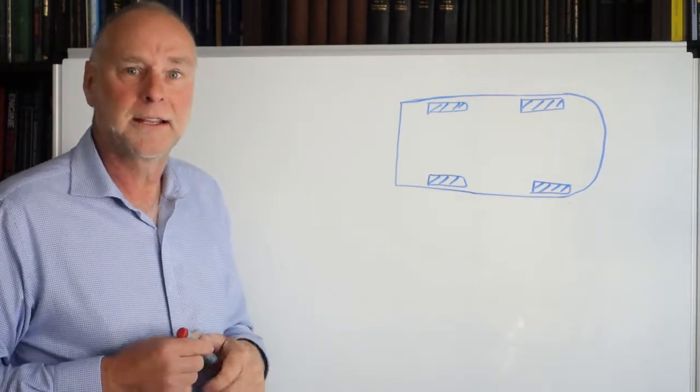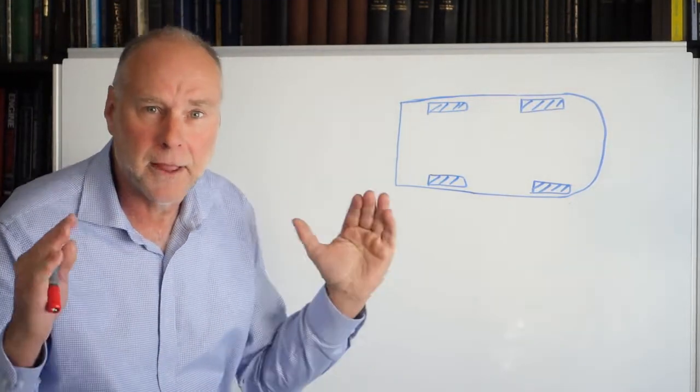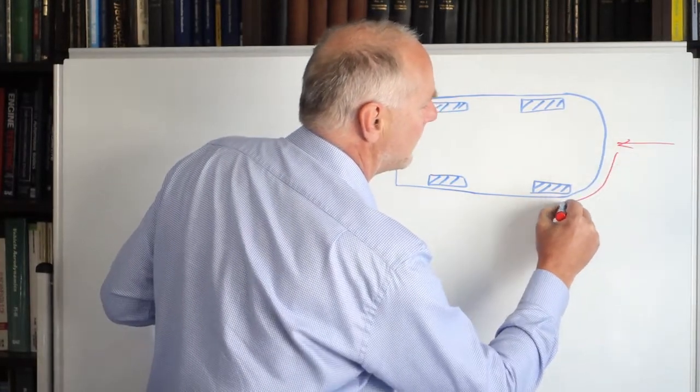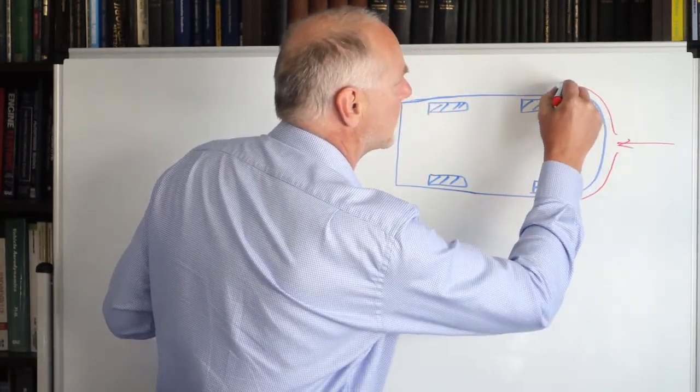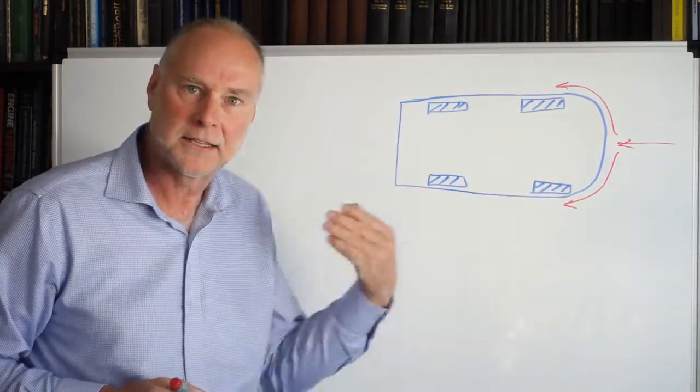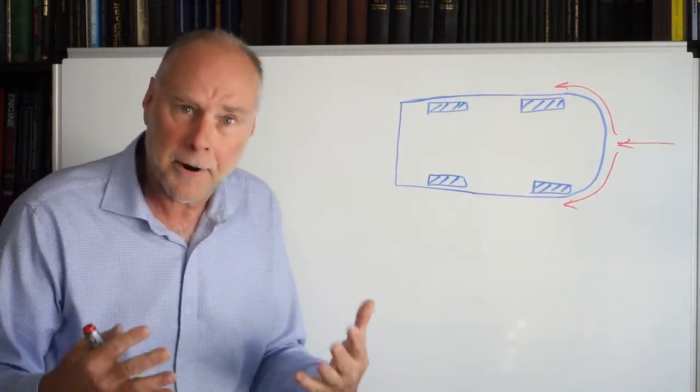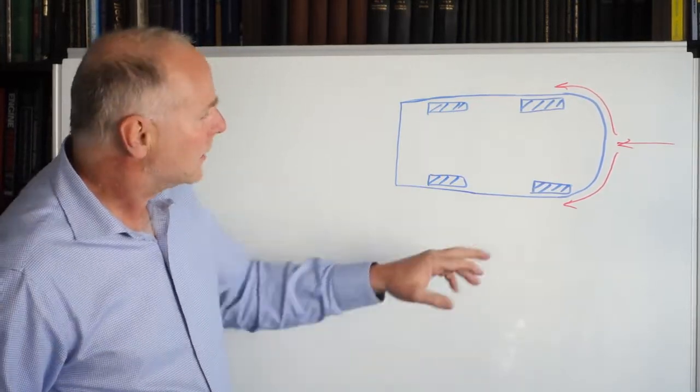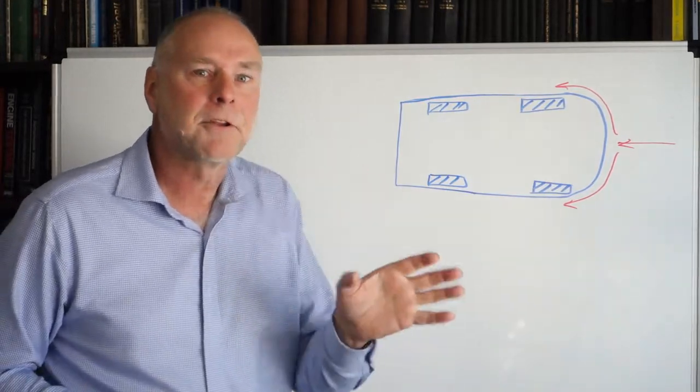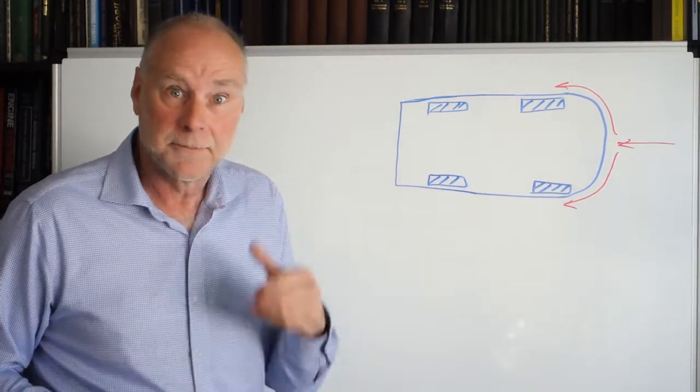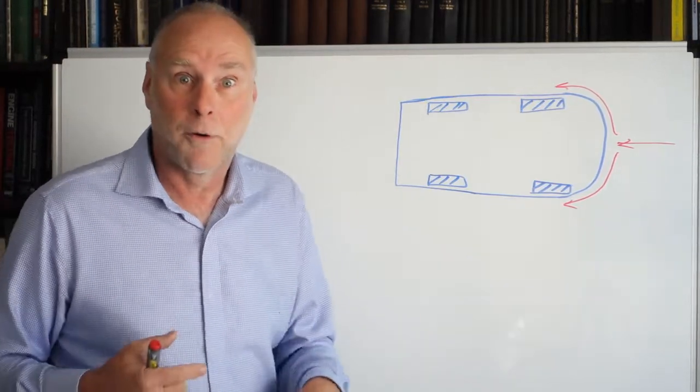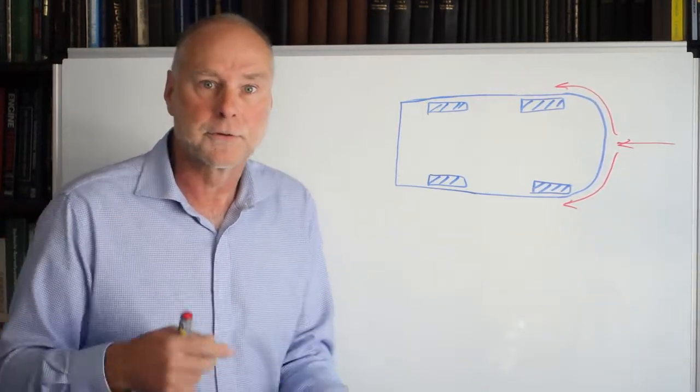The first airflow we need to look at is that which wraps around the front corners. So we have airflow approaching the car, and then we have it wrapping around the corners like that. Now, we want that airflow to stay attached as it goes around the corners. If it gets separated at that point, it'll create more drag. So we have attached flow around the corner, and interestingly enough, that flow can create some thrust, some negative drag. Of course, the thrust being developed isn't enough to pull the car forward, but it does reduce the overall drag.